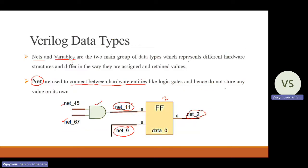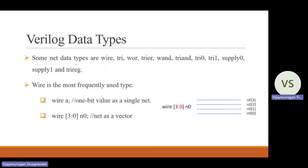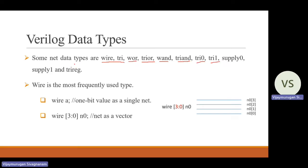Like logic gates, nets do not store any value. A net just transfers the data — it does not store any values. Some net data types are: wire, tri, WOR (wired OR), tri OR, wired AND, tri AND, tri0, tri1, supply0, supply1, and triregister. These are examples of net data types.